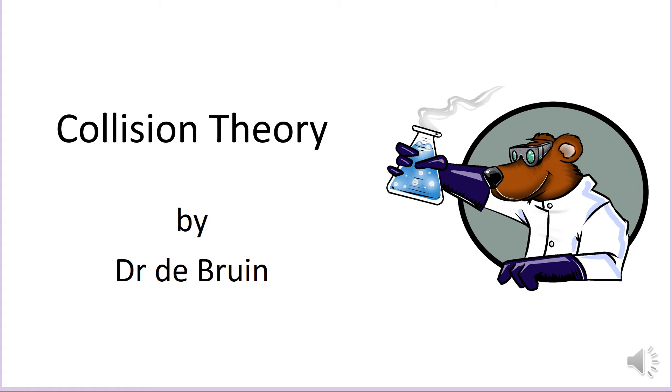This is a revision video for the GCSE chemistry topic of collision theory. If you're taking AQA GCSE chemistry or combined science, this comes up as part of the sixth unit, the rate and extent of chemical change, which is examined in paper two. In this video we're going to focus on the five ways you can speed up a chemical reaction and why each one of them works.